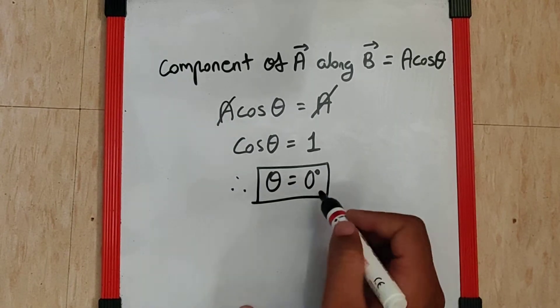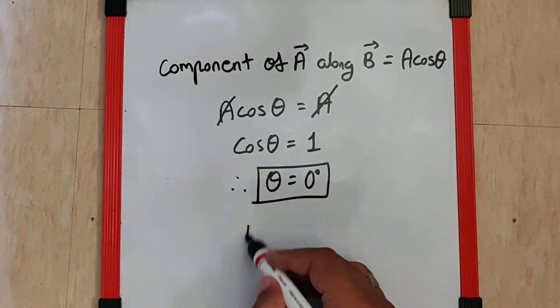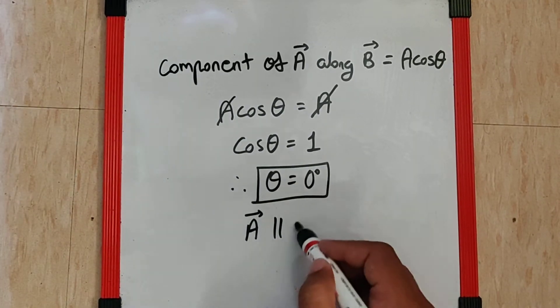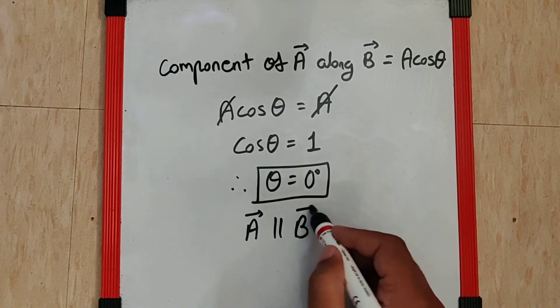Now, if θ is 0 degrees, I can say A bar is parallel to B bar.